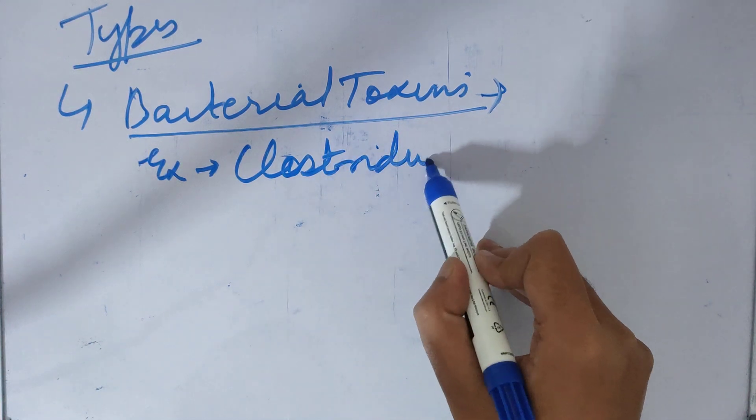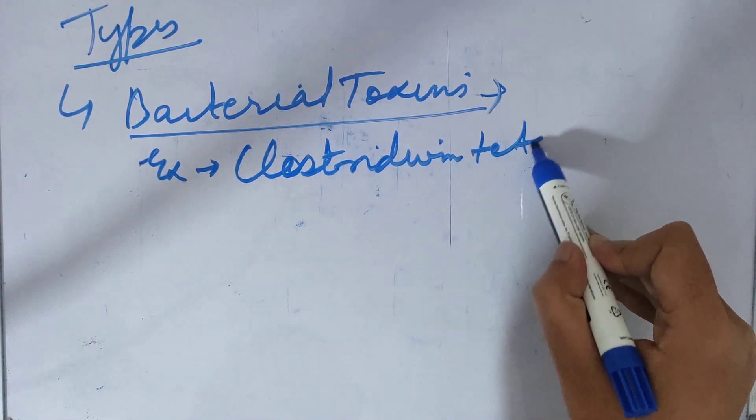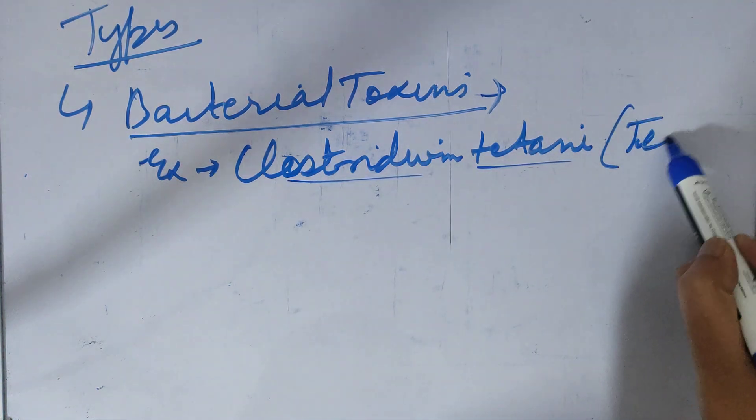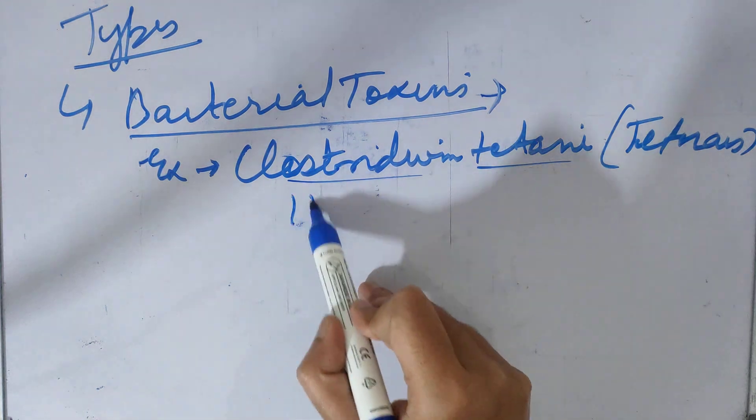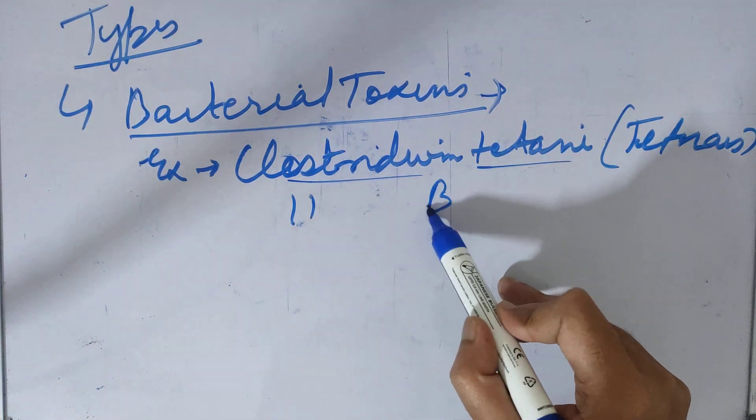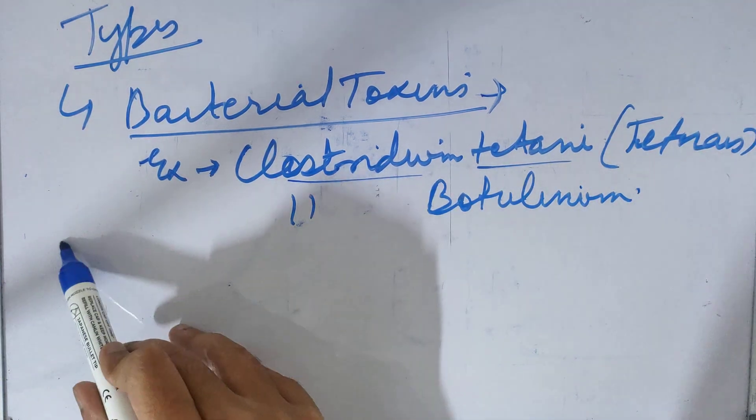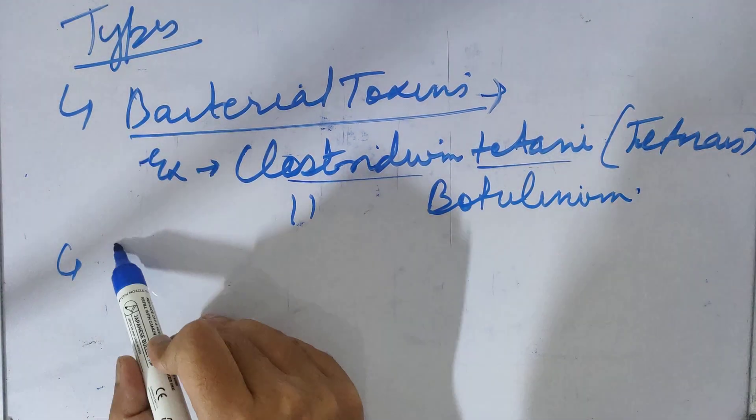Examples of bacterial toxins are Clostridium tetani, which causes tetanus, and Clostridium botulinum. These are bacterial toxins.